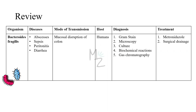Let's have a quick recap. The organism we discussed today is Bacteroides Fragilis. It is responsible for causing abscesses, sepsis, peritonitis, and diarrhea. It is transmitted when there is mucosal disruption of the colon and it enters the bloodstream and other organs. Hosts are humans. Diagnosis is based on gram staining, microscopy, culture, biochemical reactions such as sugar fermentation, and gas chromatography. For treatment, metronidazole is used and surgical drainage of abscesses is also required.